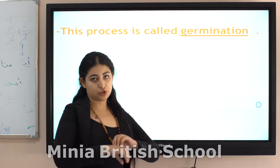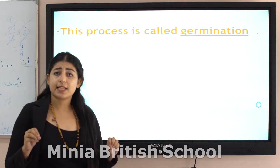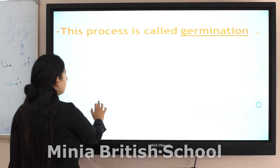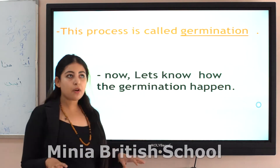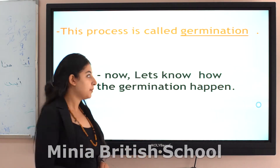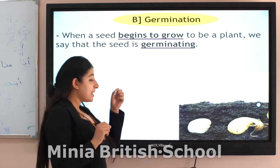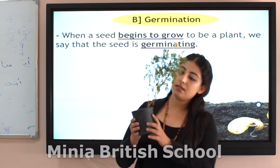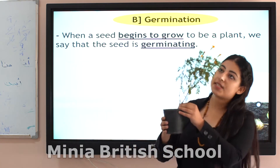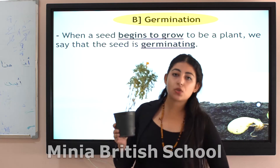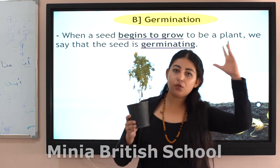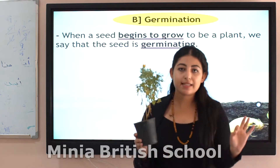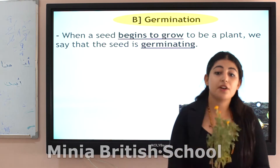It's called what? Germination. So today we are talking about what? We are talking about germination. Now let us know how germination happens. When a seed begins to grow to be a new plant, we say that the seed is germinating. The seed is what? The seed is germinating.